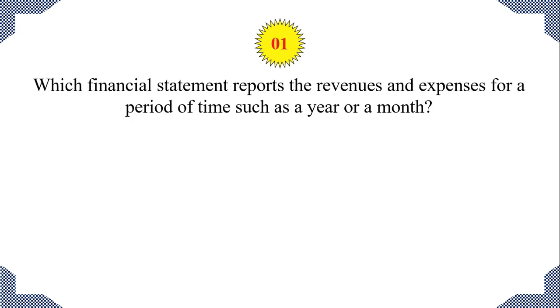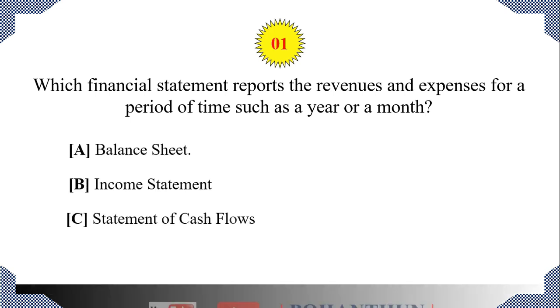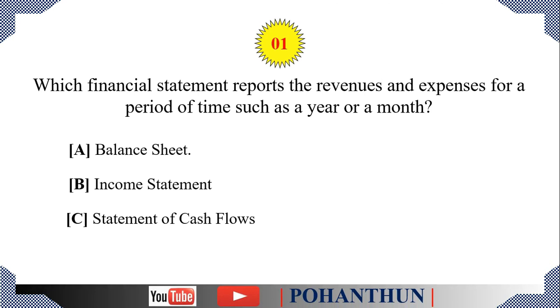Question number one. Which financial statement reports the revenues and expenses for a period of time, such as a year or a month? Option A, balance sheet. Option B, income statement. Option C, statement of cash flows.